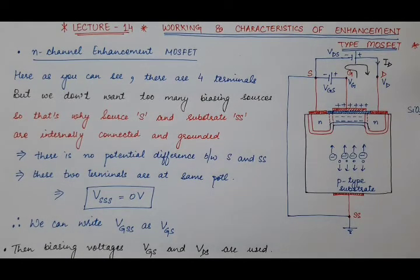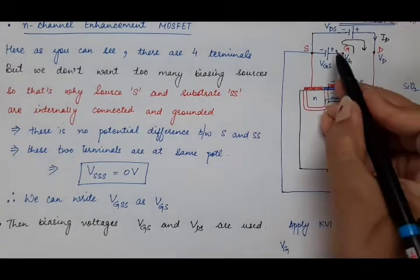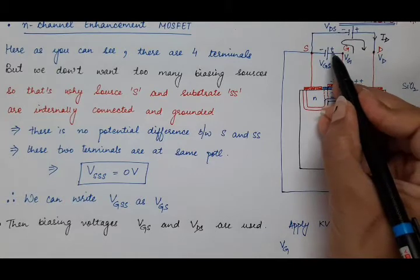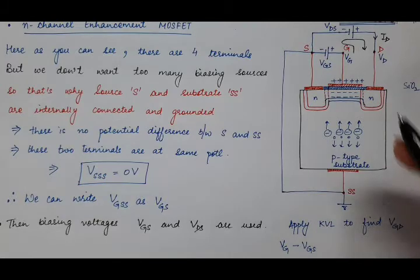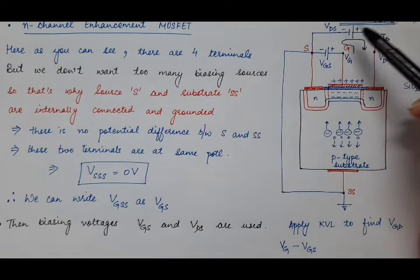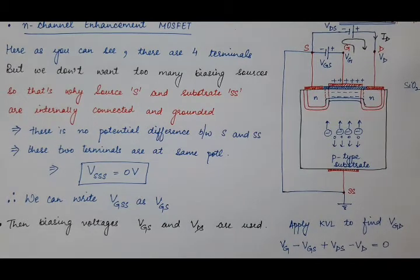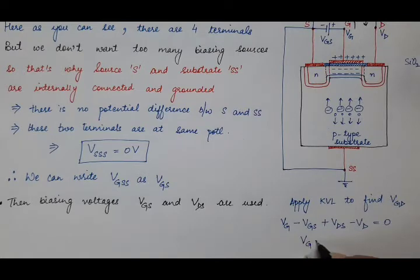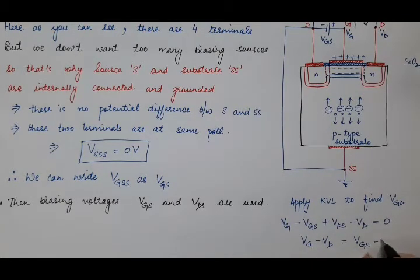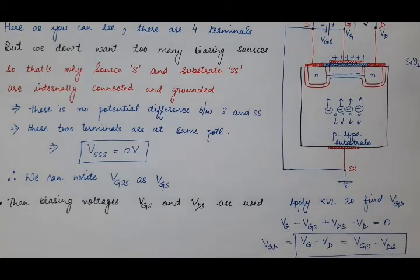Applying KVL to find VGD: starting from VG, signs are not alternating, so we have minus VGS. Then we have biasing voltage VDS — signs are alternating, so we have plus VDS. Then plus VD — signs are not alternating, so minus VD, all equal to zero. Therefore, VG minus VD equals VGS minus VDS. This quantity, VG minus VD, can be written as VGD — the potential difference between gate and drain.